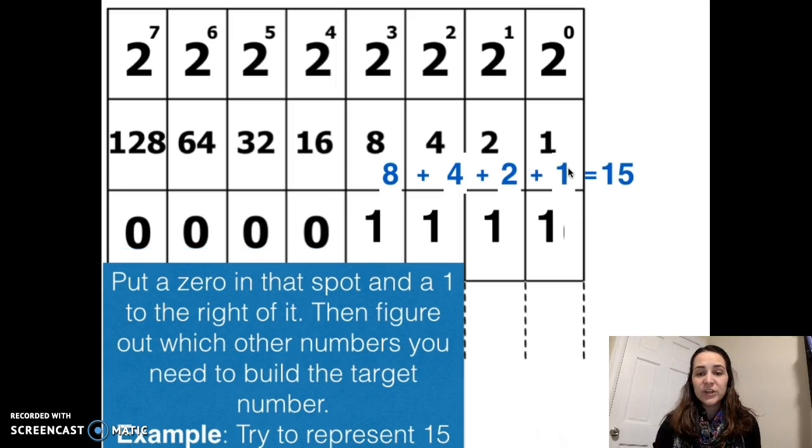For example, in this situation, if I want to represent 15, I'll need to have an 8, a 4, a 2, and a 1. So I'll put 1 in all of these spaces.